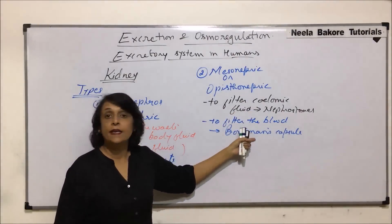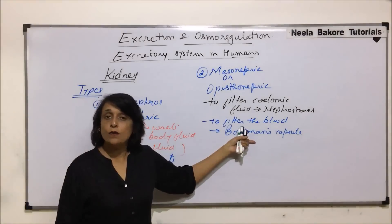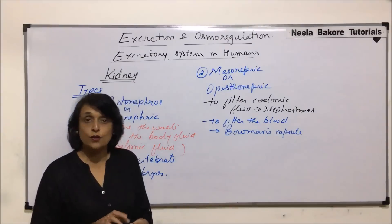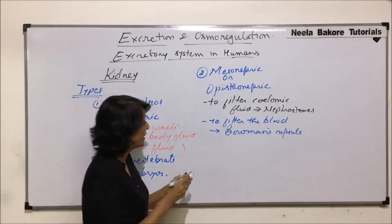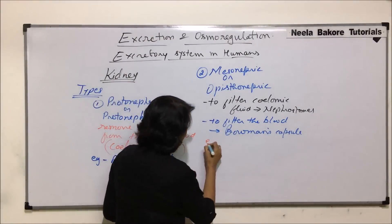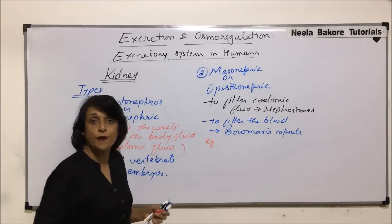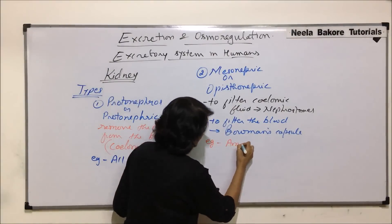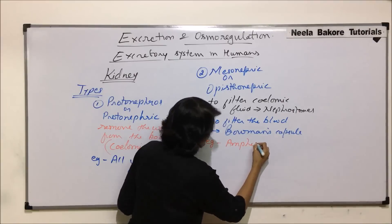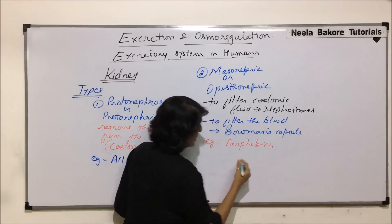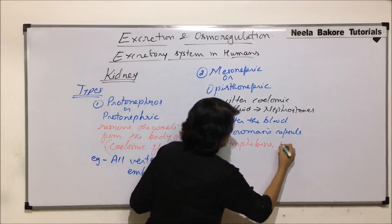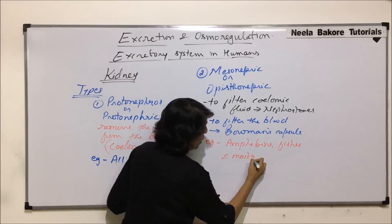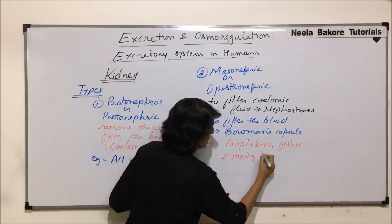Both liquids are filtered in meso-nephric kidneys. This kind of meso-nephric kidney is found in amphibians, fishes, and most reptiles.